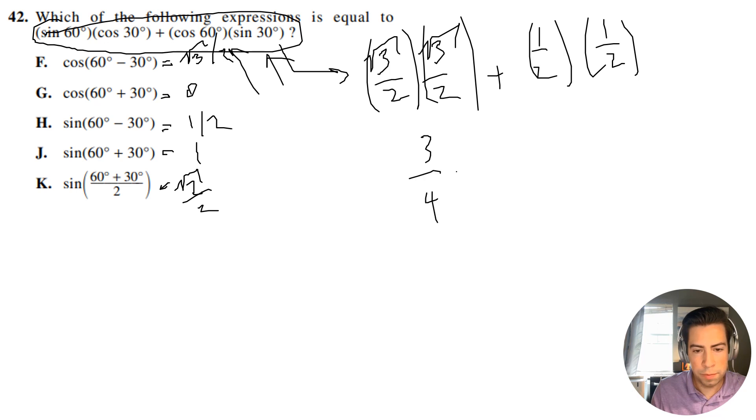So I'm going to get 3 over 4 plus 1 over 4. So this is going to equal 4 over 4. That's going to equal 1. So one of our answer choices equals 1, it's going to be J. So our answer is J.